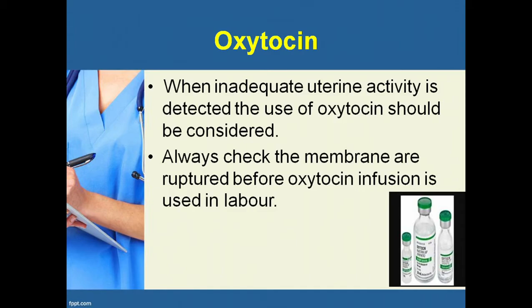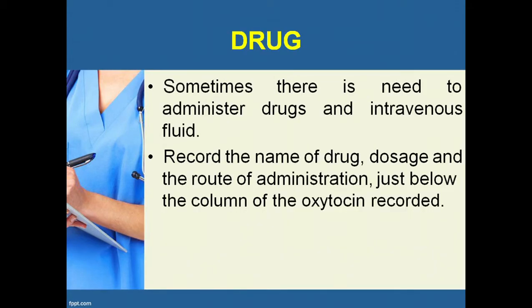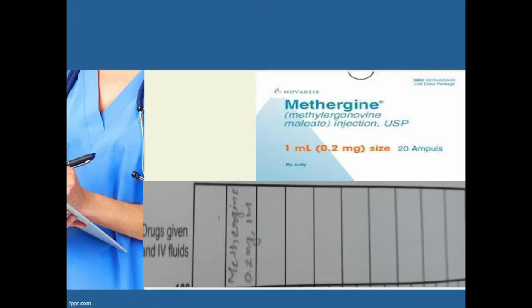Oxytocin: if inadequate uterine activity is detected, use of oxytocin should be considered. Always check that the membranes are ruptured before oxytocin infusion. Record the units of oxytocin per liter in the upper row and the number of drops per minute in the lower row, every half hour. If drugs are administered, record the name, dosage, and route of administration below the oxytocin column — for example, morphine, pethidine, or phenergan.